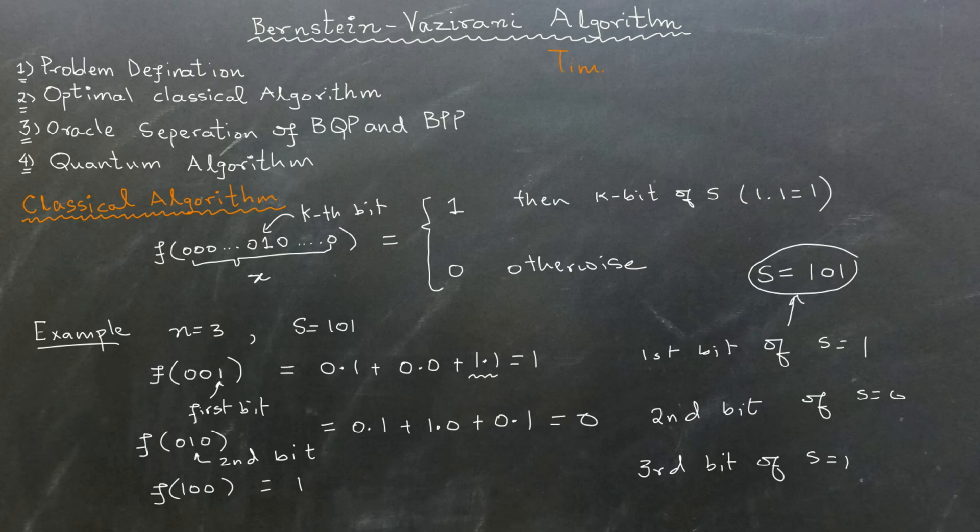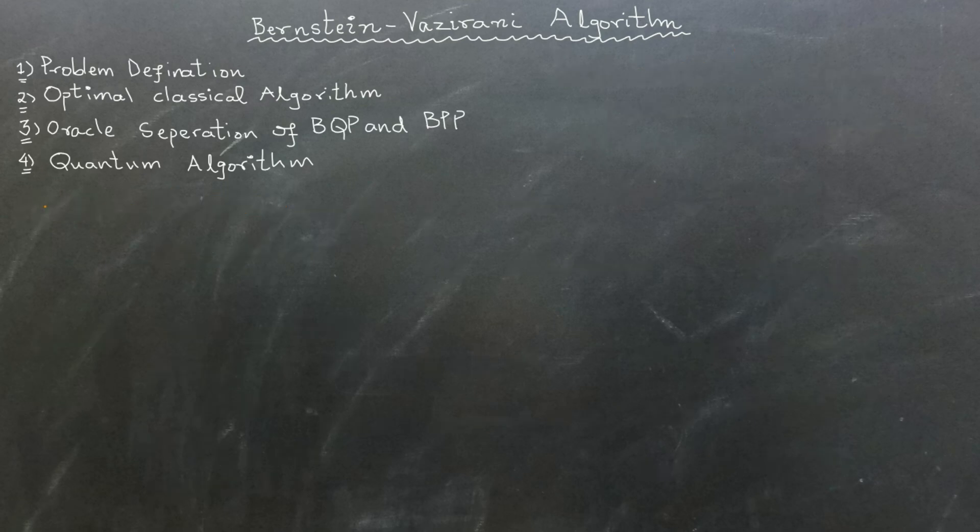The time complexity of this classical algorithm is O of n, because we need n calls to the oracle. We cannot achieve better time complexity on a classical computer even using probabilistic algorithms. Bernstein-Vazirani algorithm is the simplest algorithm that provides BQP and BPP oracle separation.